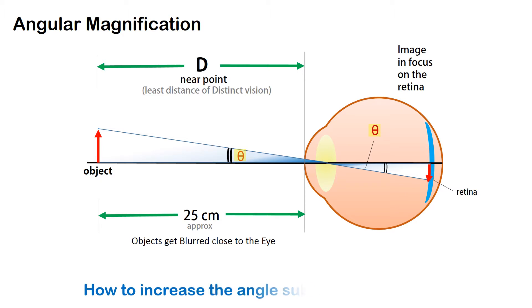So the challenge for us is if we have to see objects larger and more clear, how do we bring them closer to the eye or alternatively how do we increase the angle that the object subtends on the retina so that we can see it larger and clearer.